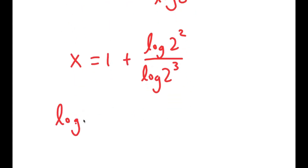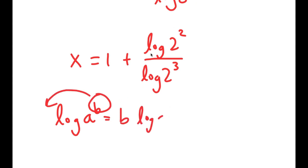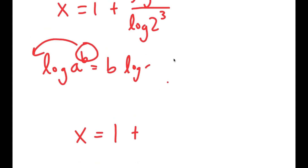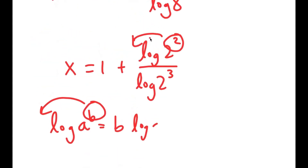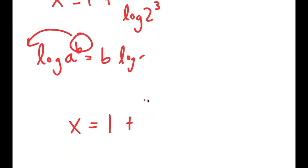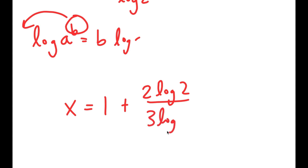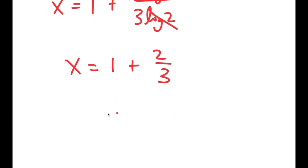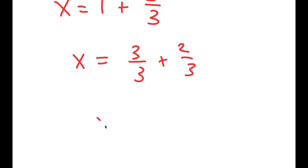Now, if I have something in the form log of a to the power of b, I can move b to the front to get b times log a. So I'm going to do that with both of these. I get x is equal to 1 plus — moving the 2 to the front — 2 times log 2, over 3 times log 2. These two log 2s cancel out, and I get x is equal to 1 plus 2 over 3, which equals 3 over 3 plus 2 over 3, which is 5 over 3. So x is 5 over 3.